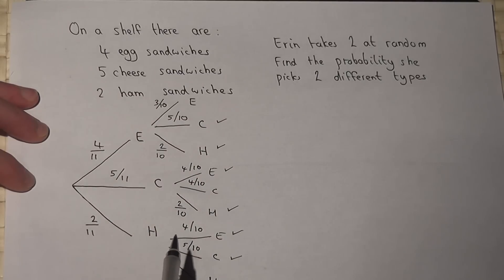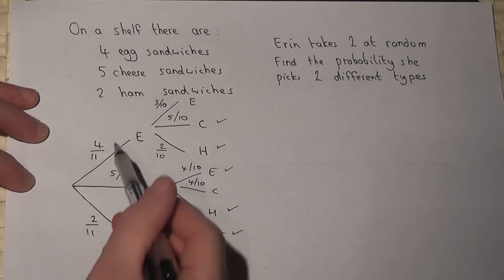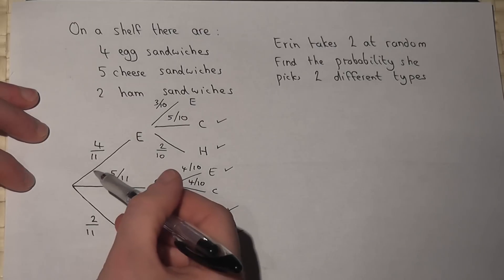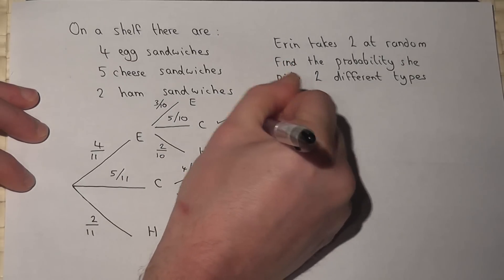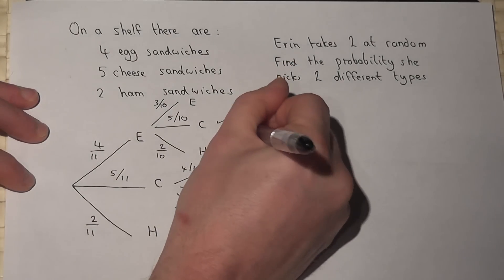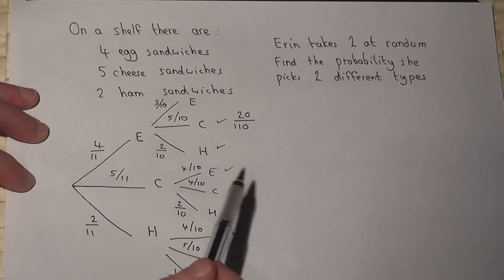We then work out each of these six options separately, and we find each separate chance by multiplying the fractions. So this is four elevenths times five tenths. Four times five is twenty, eleven times ten is 110.